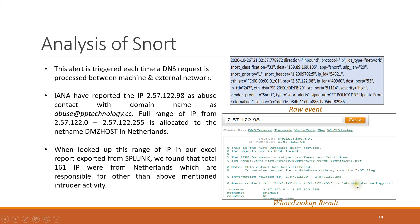The source IP was 2.57.122.98. When I searched this IP on a WHOIS lookup, I found that the entire range of this IP is marked as abusive, and the domain name was abuse@pp-technology.cc. The IP was originated from the Netherlands. When I searched this IP range in our Excel export from Splunk, I found a total of 161 IPs from the Netherlands, which may be responsible for other intruder activity beyond the one mentioned.